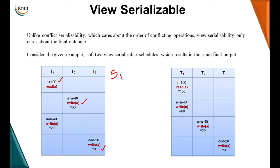In a view equivalent schedule S2, the same actions are performed: A is read, 40 is subtracted and written, giving 60. T2, which has already read, performs A − 40, giving 40 written as 20. Then the write of A performs 20 − 20 = 0. The final output is the same in both S1 and S2, hence these are called view serializable.